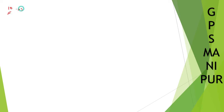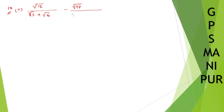We are doing question number 10, simplify Roman number 2. We have root over 18 divided by root 3 plus root 6, plus root 3 plus root 6 minus root over 48 divided by root over 2 plus root over 6, plus root over 6 divided by root over 2 plus root over 3.